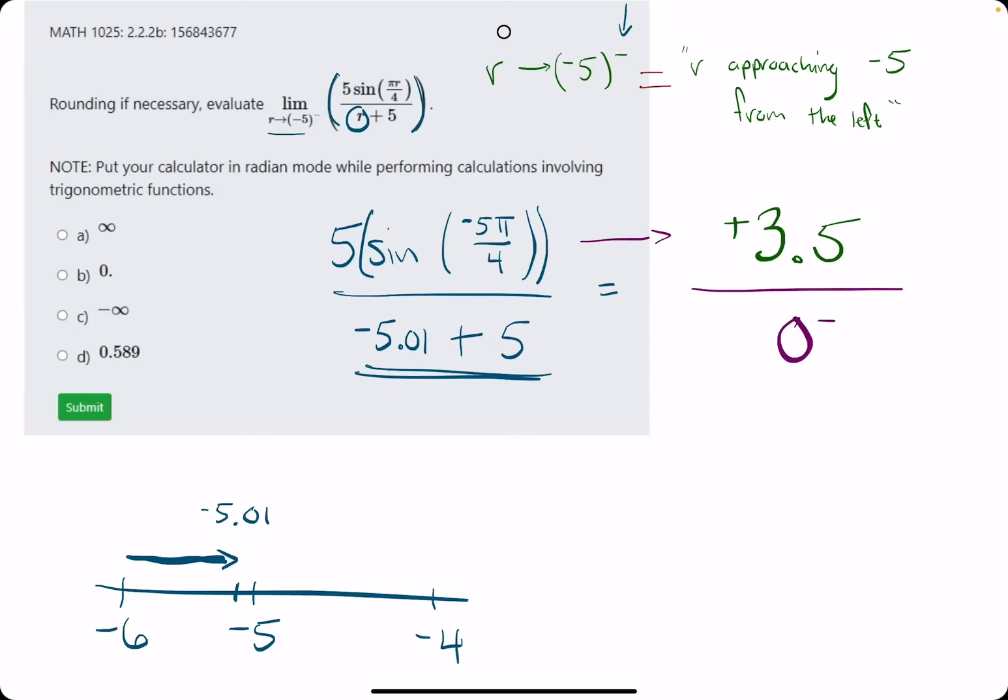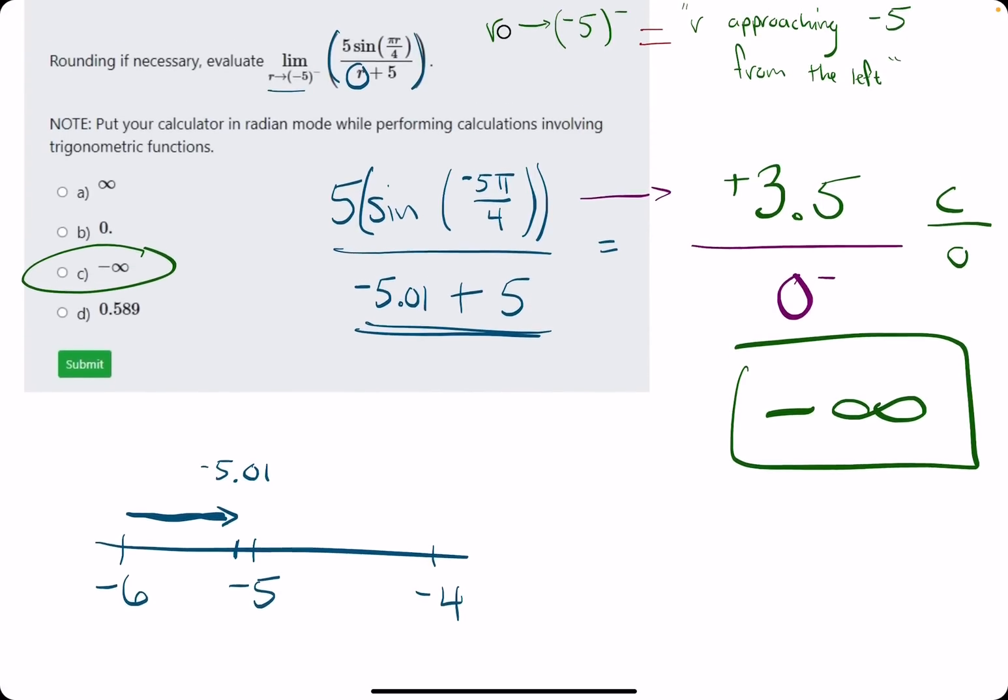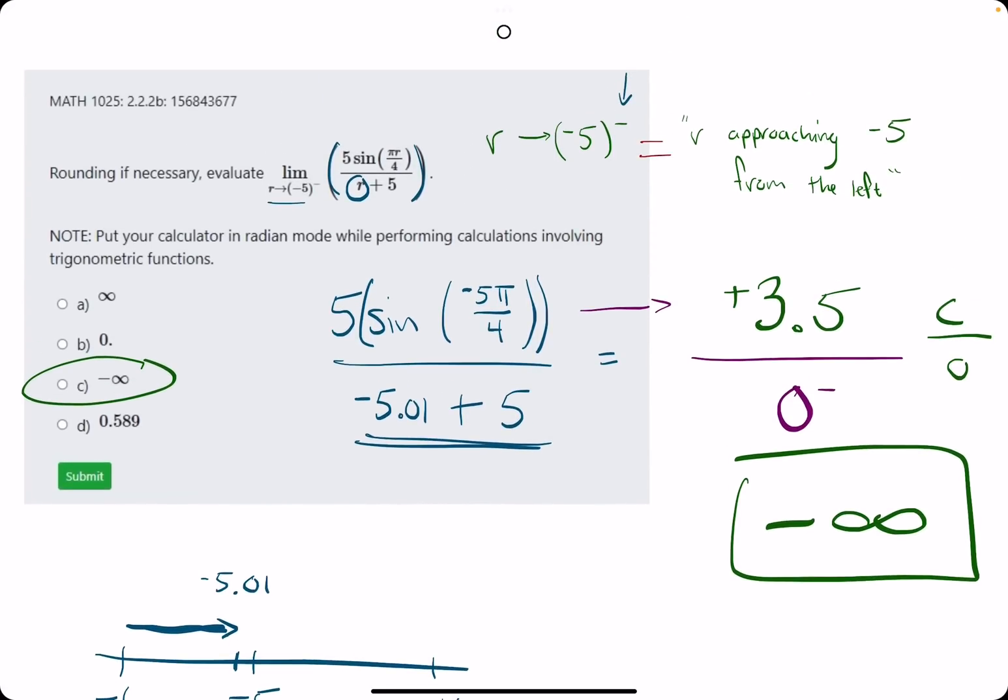A positive constant over a negative 0 - a positive divided by a negative is negative. Because it's a constant over some 0, it goes to infinity. In this case, C is our answer - negative infinity.